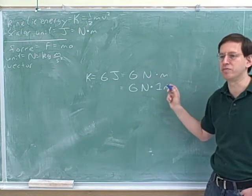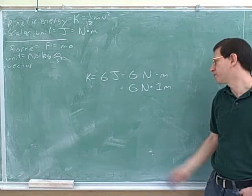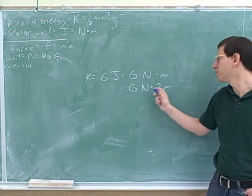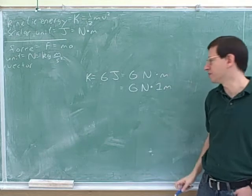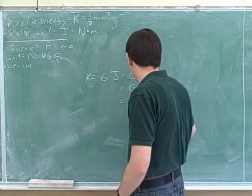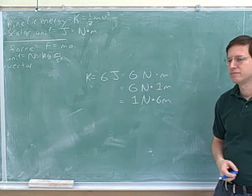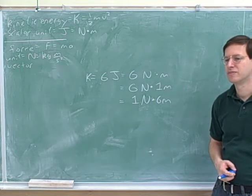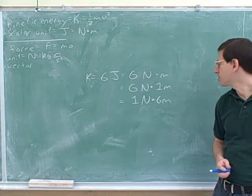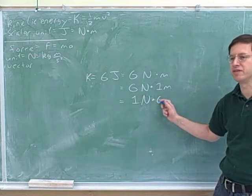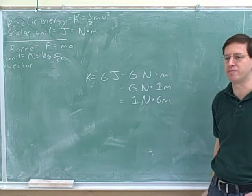What this tells us is that if we push on the object with 6 newtons of force, it'll take 1 meter before it comes to a halt. Remember, the whole point of the kinetic energy is to tell us how hard it would be to bring the object to a halt. If the object is moving with 6 joules of kinetic energy, that would mean that if you're pushing with 6 newtons of force, the object will move for 1 more meter before it comes to a halt. We could also say that if we're pushing with 1 newton of force to bring this to a halt, we'll have to push for 6 meters before it comes to a halt.